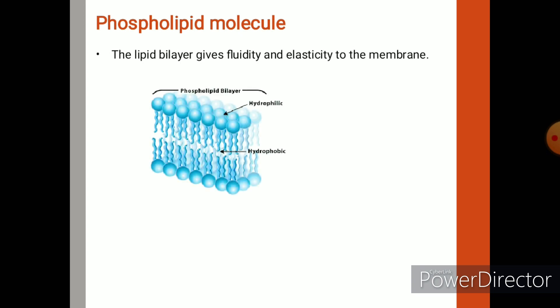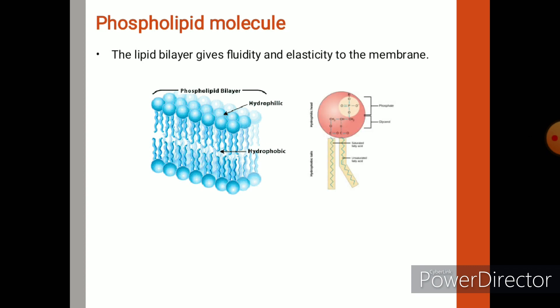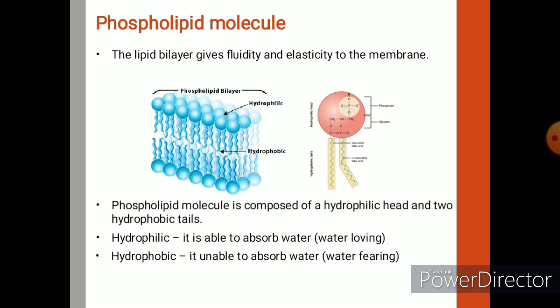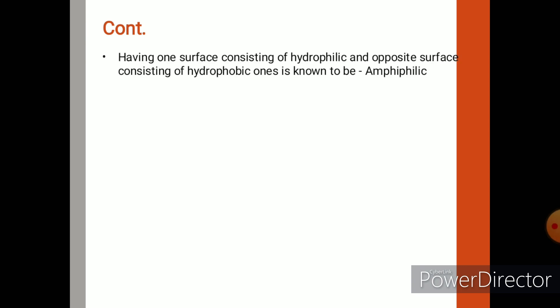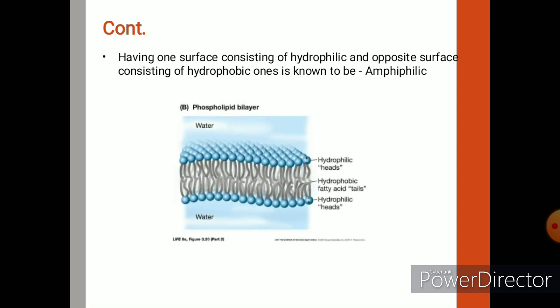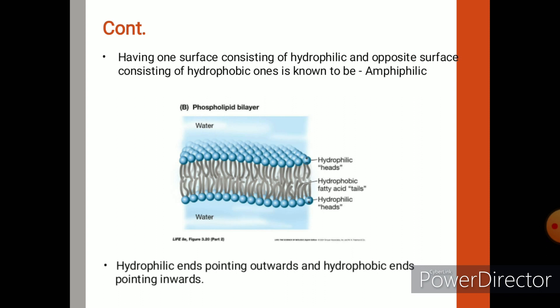If we see the structure of a single phospholipid molecule, it consists of two parts: a head and two tails. The head part is hydrophilic in nature, meaning it absorbs water — a water-loving surface. Whereas the tail part is hydrophobic, meaning it cannot absorb water — a water-fearing surface. These phospholipid molecules are amphiphilic in nature, meaning each molecule has one hydrophilic surface and one hydrophobic surface. The hydrophilic head points outward and hydrophobic tails point inward.